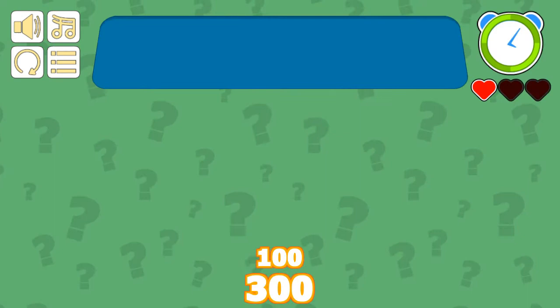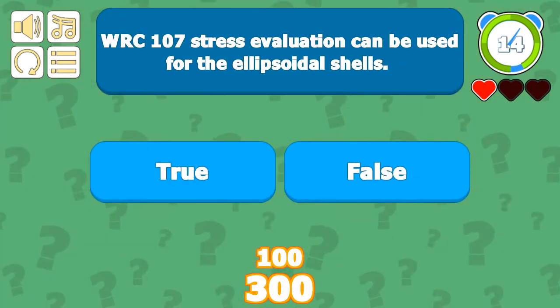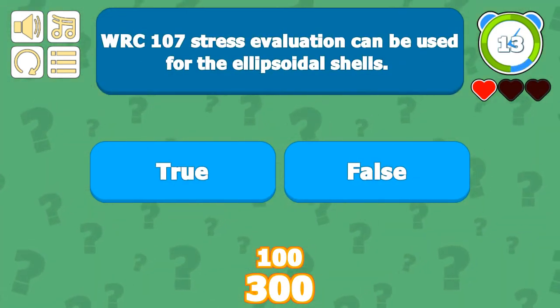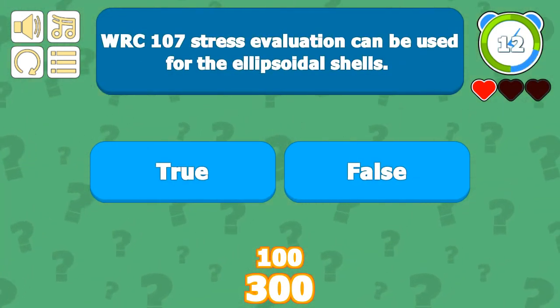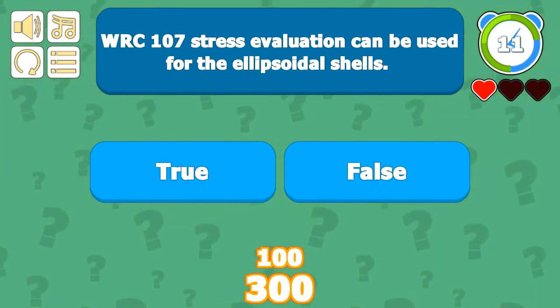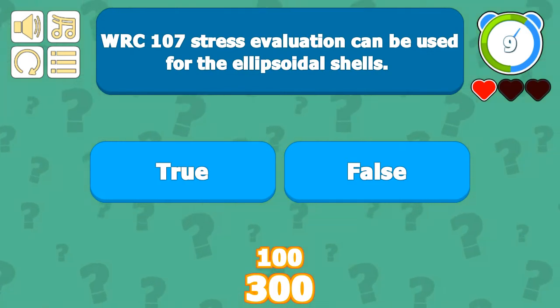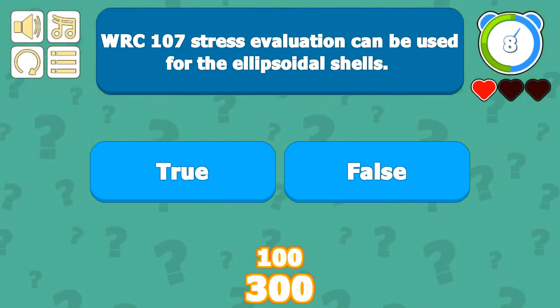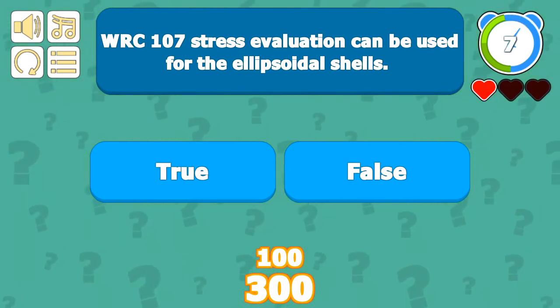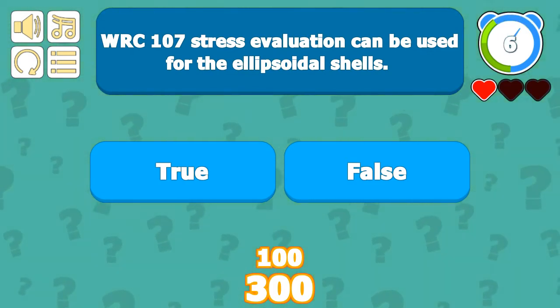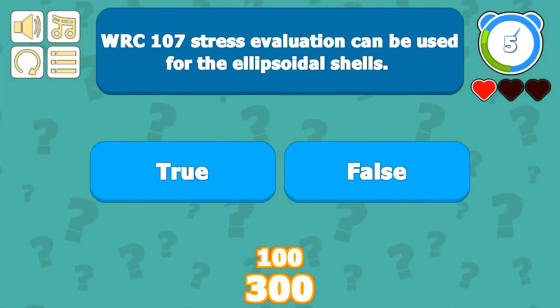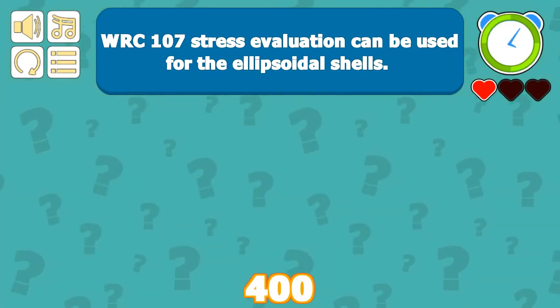WRC 107 stress evaluation can also be used for ellipsoidal shells — that is quite true — and the method may be applied to ellipsoidal shells.